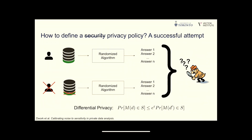We fortunately have a definition called differential privacy, which requires that the algorithm's behavior be indistinguishable to an observer whether the algorithm is operating on a version of the data that contains a specific individual's record or a version that does not. This means an observer cannot tell whether we included a specific individual's record in the dataset, and therefore cannot learn anything private about that individual.